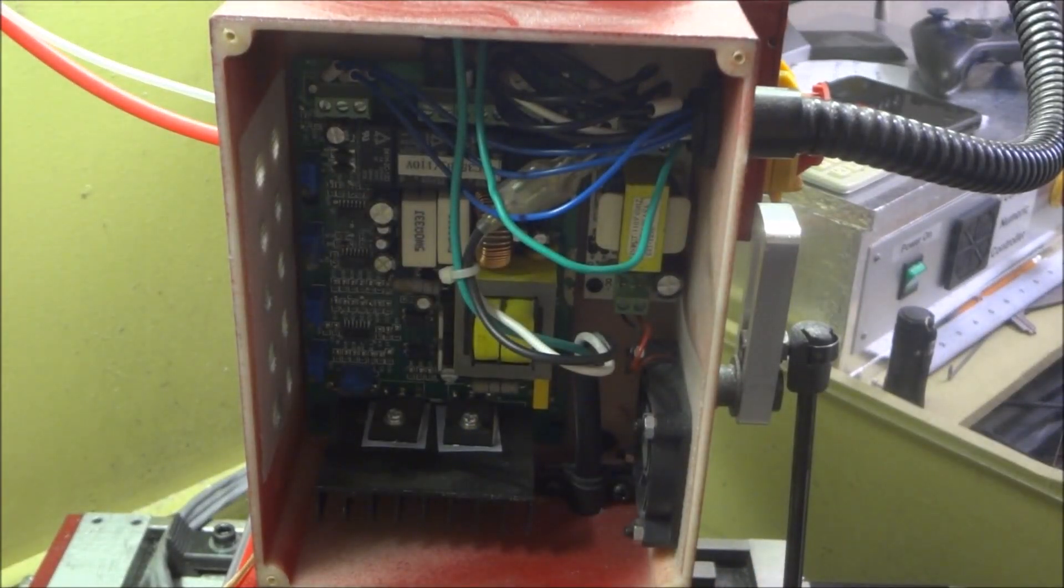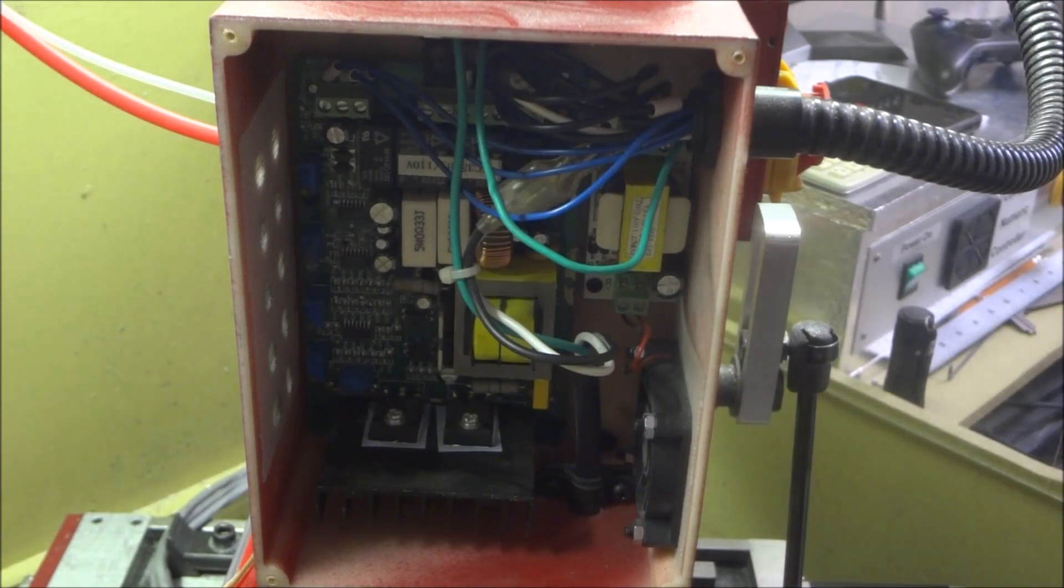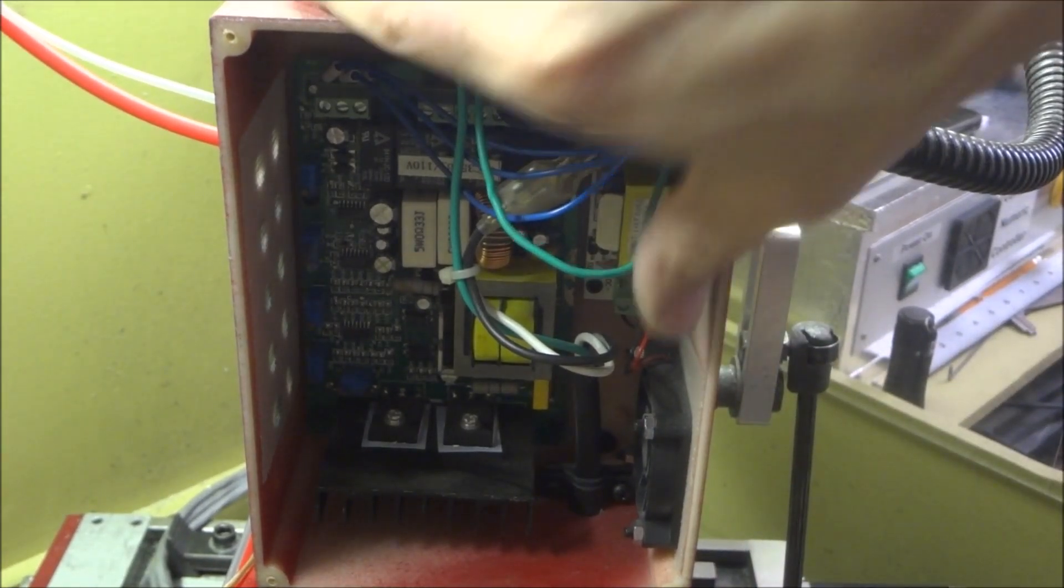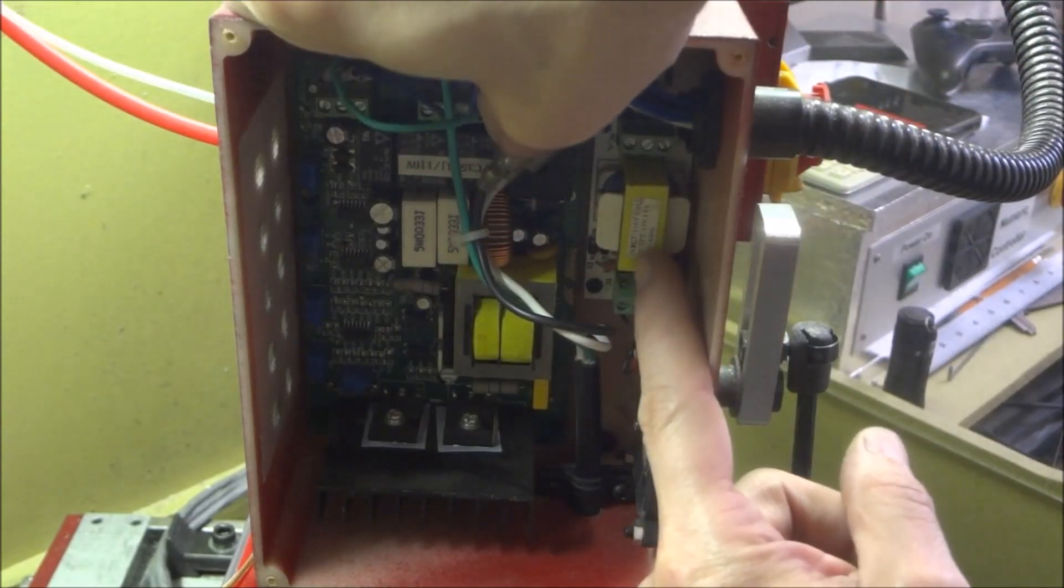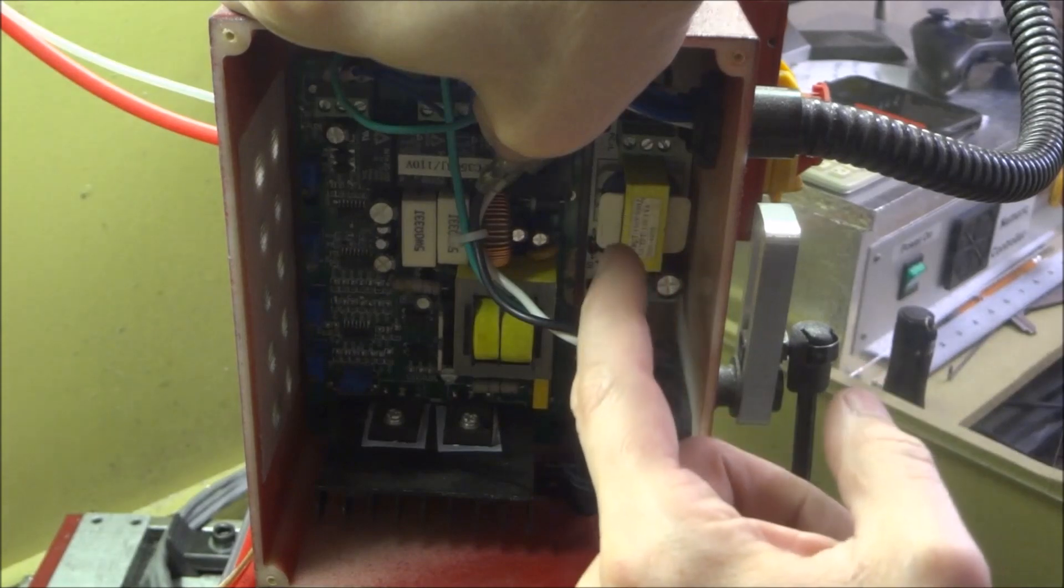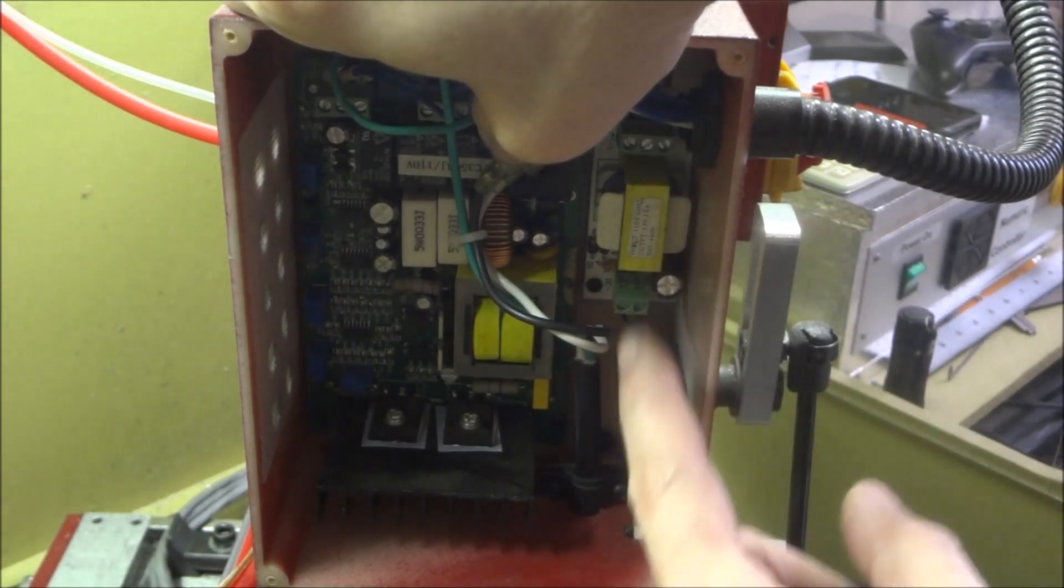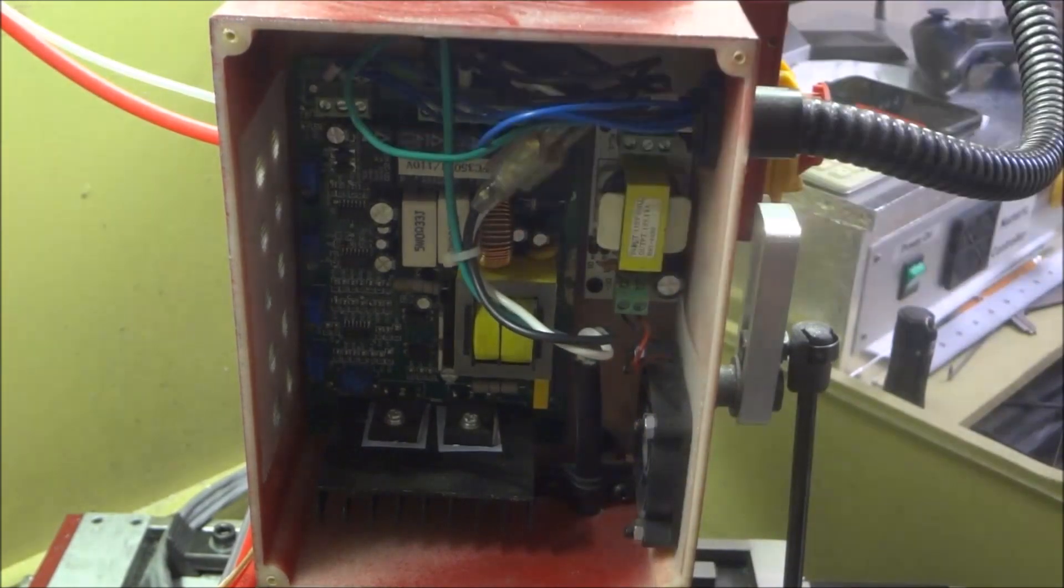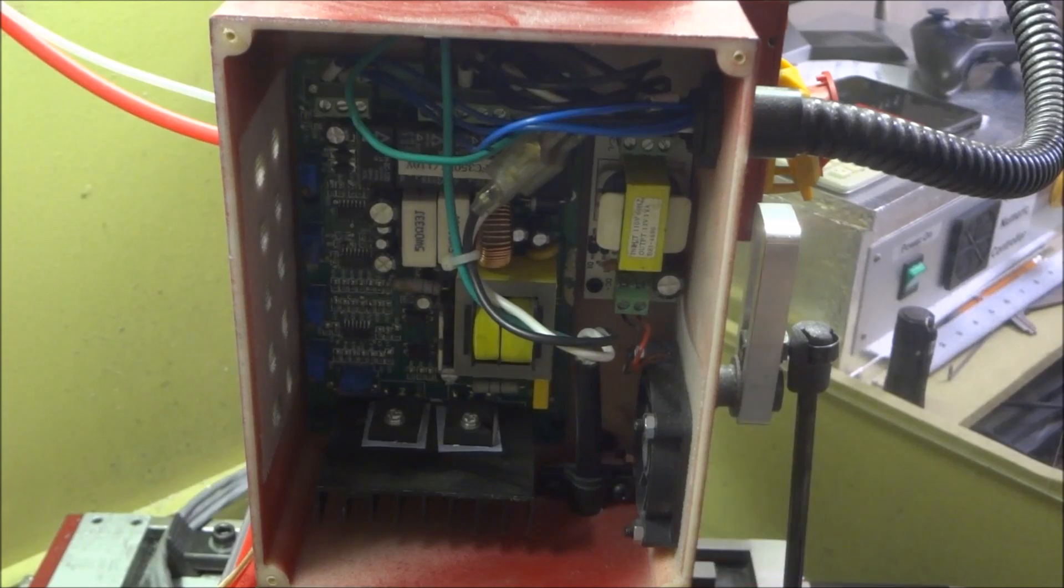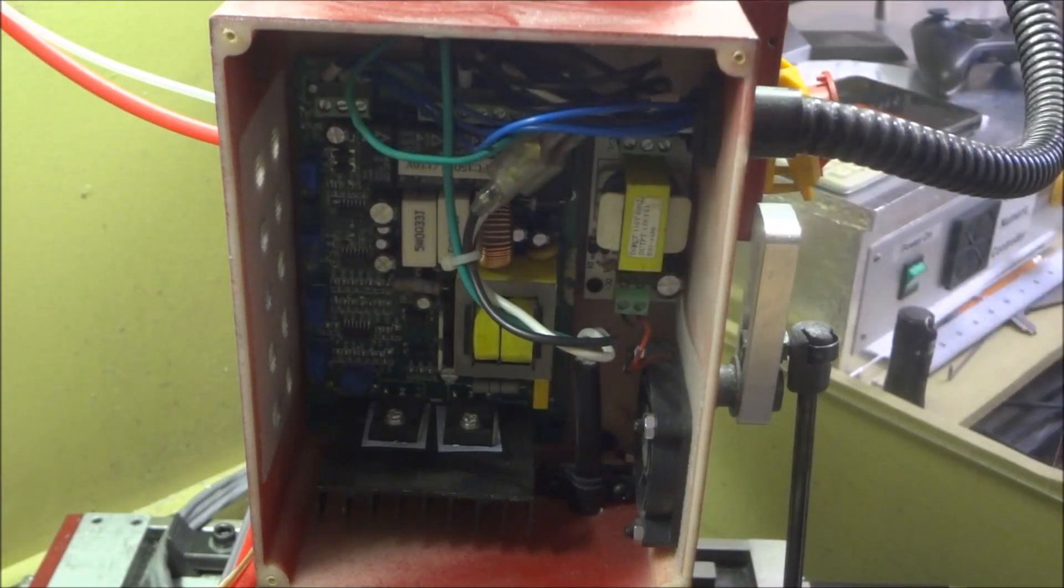Now what we've got in here is we've got this little board right here, and this board just converts 110 volts to 12 volts and all it does is power this fan. Turn the mill on here, this fan should come on, but as you can see it doesn't.